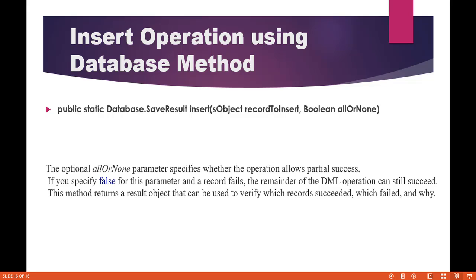The optional allOrNone parameter specifies whether the operation allows partial success or not. So let's say if you have 10 records that you want to insert and one of those records is at fault — meaning some required information is missing — if you set allOrNone to false and that record fails, the remainder of the DML operation will still go through successfully.